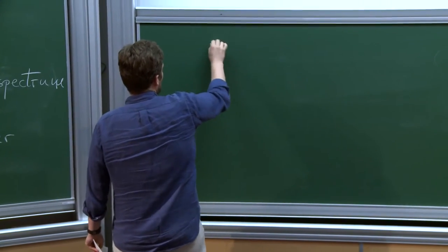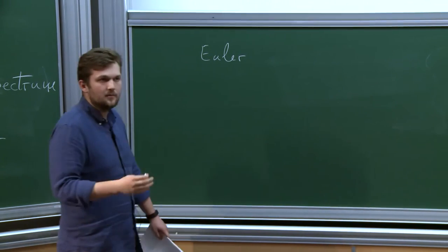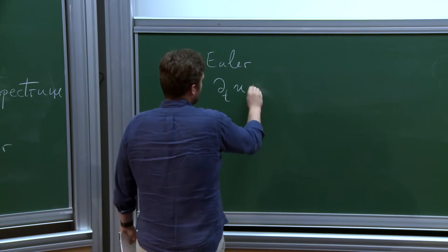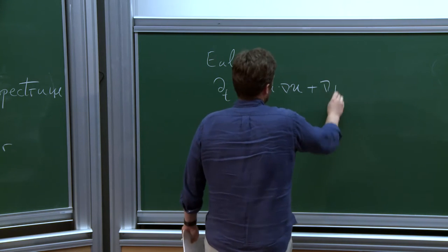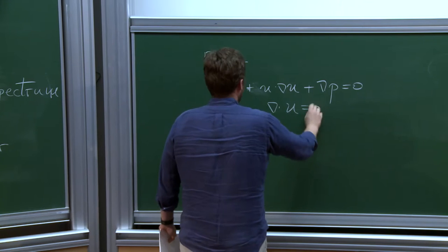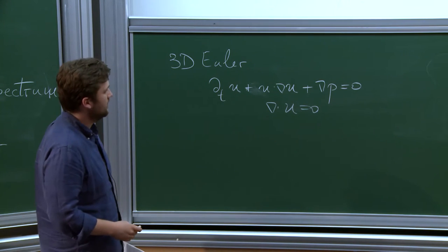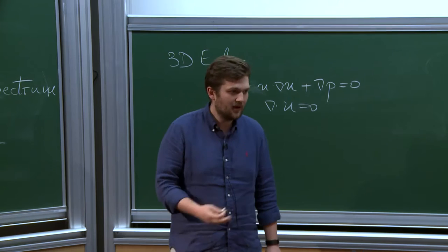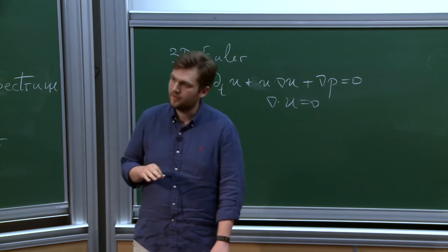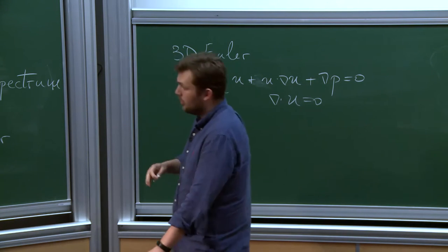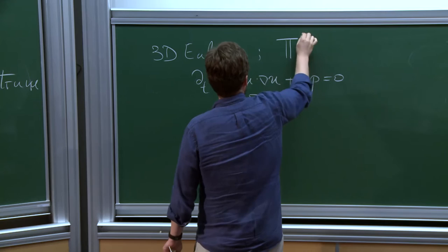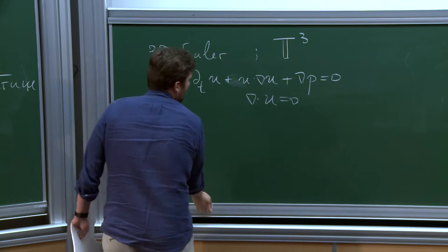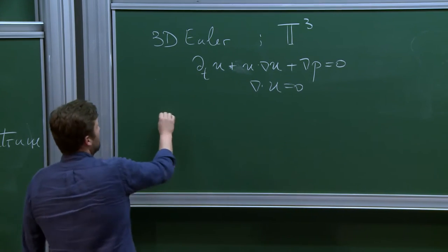We're going to deal first of all with the Euler equation — incompressible, density one — so this is 3D Euler for the velocity field u, and the pressure p. We're going to talk about turbulence, and turbulence is generated at the boundaries, but the statistical theories of turbulence deal with the behavior away from the boundaries. For all practical purposes we consider a domain without boundaries, and throughout the talk the domain is T³.